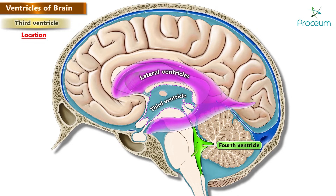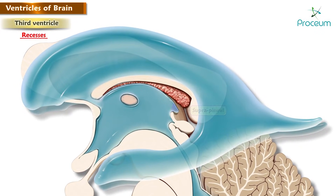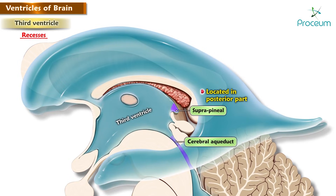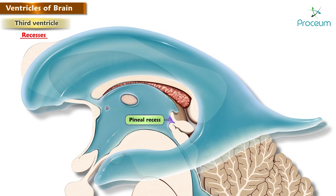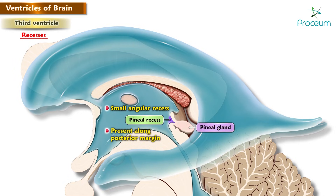The fourth ventricle in turn disseminates into the subarachnoid space. Recesses: the suprapineal recess is located in the posterior part of the third ventricle and overlies the cerebral aqueduct. The pineal recess is a small angular recess present along the posterior margin of the third ventricle and extends into the stalk of the pineal gland.